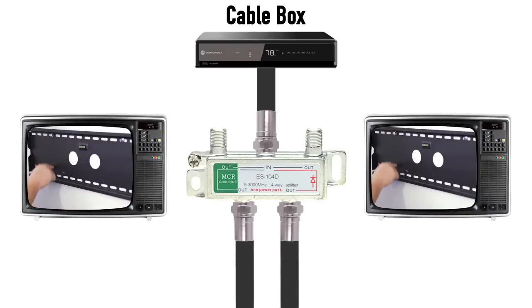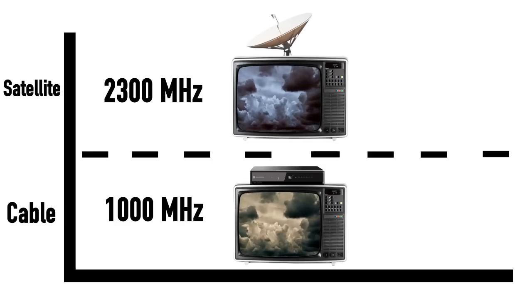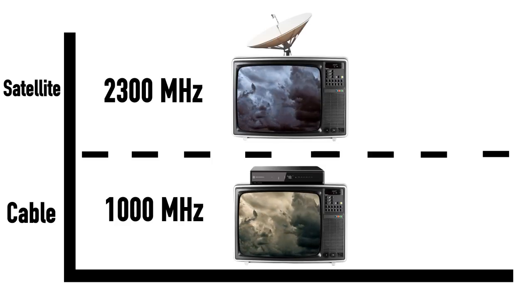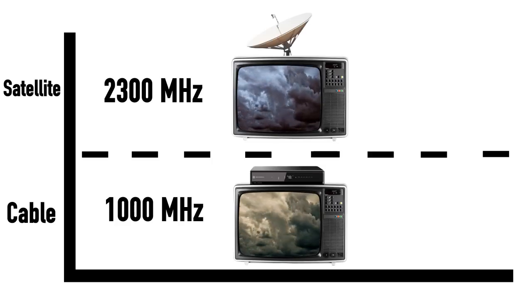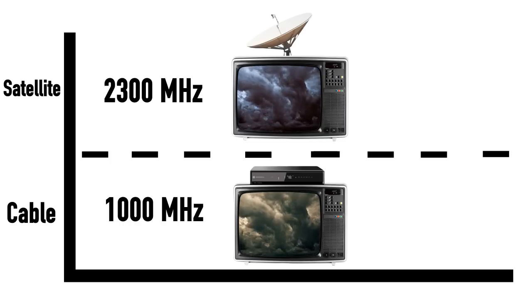For cable TV, choose a splitter that can operate at a frequency of 1000 MHz or higher. For satellite, choose a splitter that is 2300 MHz or higher.